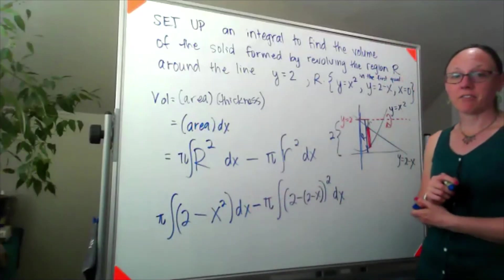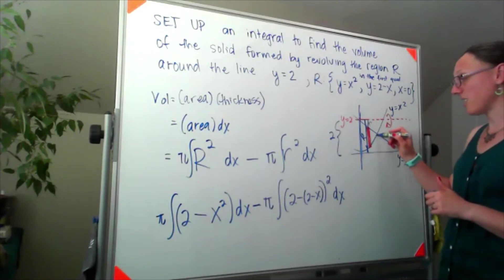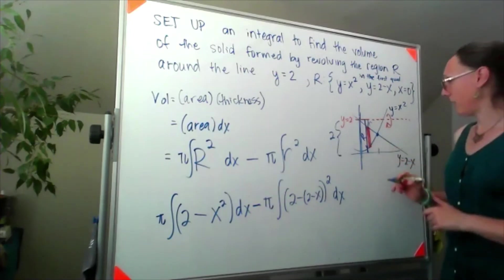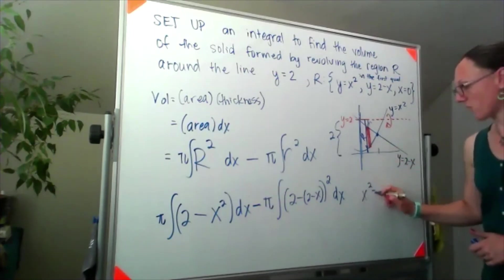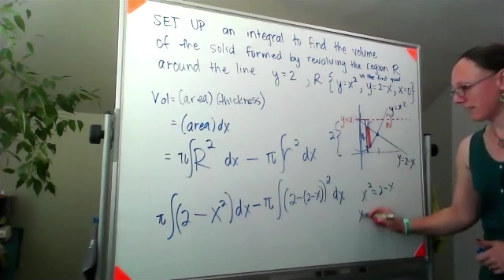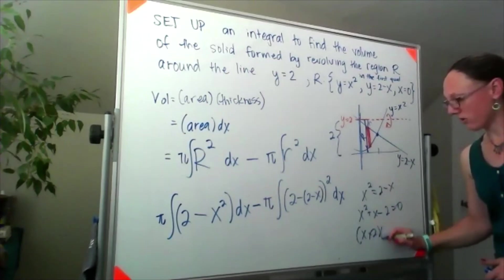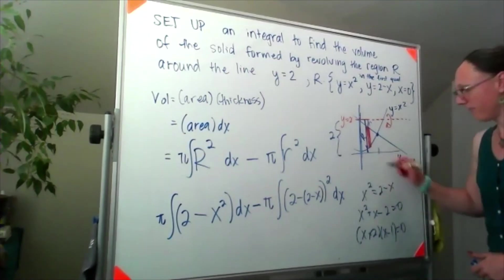Next thing I have to figure out are those limits of integration, which means I need to know this intersection point. In the interest of time, I will do it super quick. I've got x squared is equal to 2 minus x, which I think I made something that factors. I'm looking at x plus 2, x minus 1. Great, that's a 1.